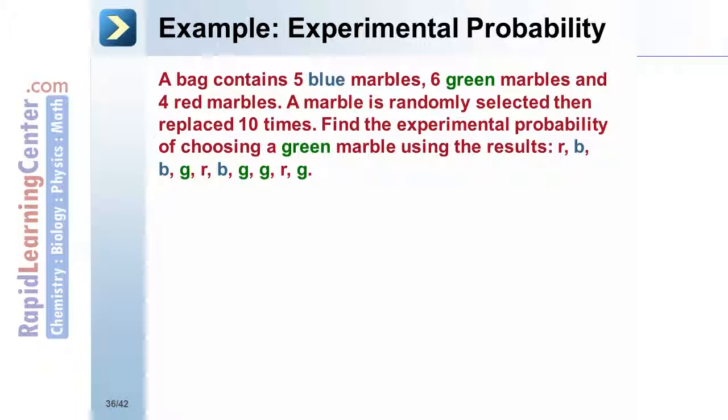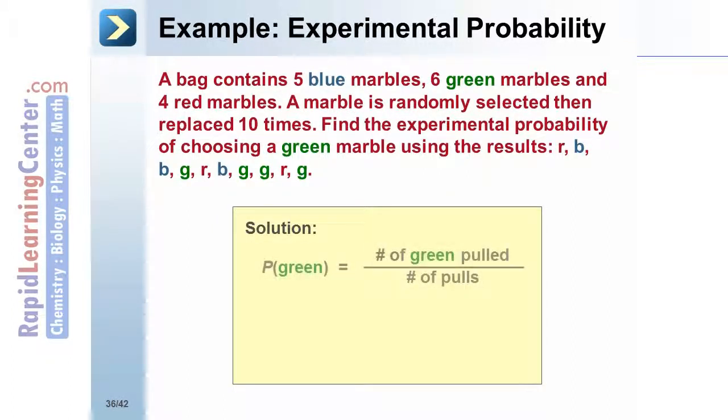blue, green, green, red, and green. Solution: The experimental probability of pulling a green marble is the ratio of the number of green marbles pulled to the total number of pulls. Therefore, the probability is 4 tenths. Convert to a percent to get 40%.